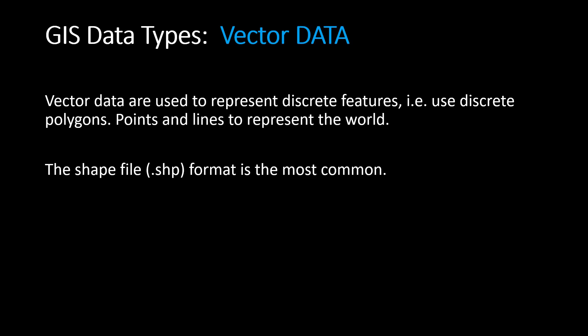Now let's move on to vector data. Vector data are used to represent discrete features such as using polygons, points, and lines to represent boundaries, roads, and locations of hospitals, schools, colleges, universities, etc. The file type is .shp, which is a shapefile, and vector data files are usually shapefiles.